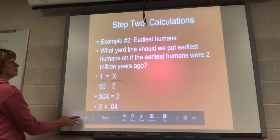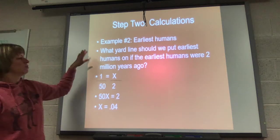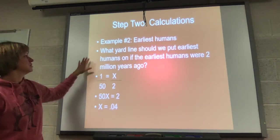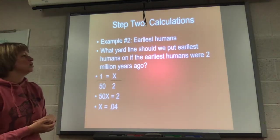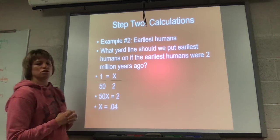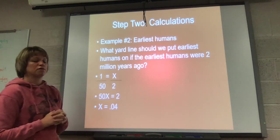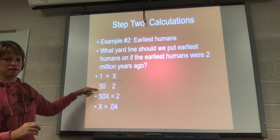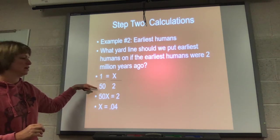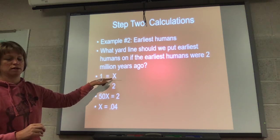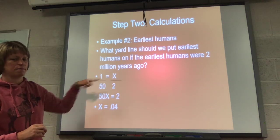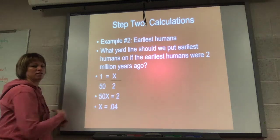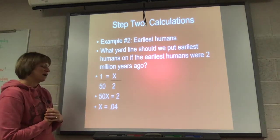Okay, now the final example I'm going to do with you though is about the earliest human. And so really our math does not change at all. This is our I-wonder question: what yard line should we put the earliest humans on if the earliest human fossils were 2 million years ago? So I still keep my 1 over 50, right? One yard is 50 million years. I still want to know what yard line to put it on, so yards to millions. I keep my X there. This time though, I have a 2.